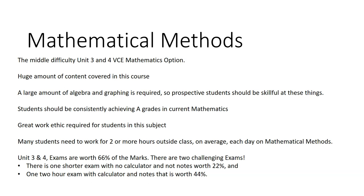For Units 3 and 4, the exams are worth 66% of the marks. There are two challenging exams. There's one shorter exam, goes for an hour, with no calculator and no notes. It's worth 22%. And there's one two-hour exam with calculator and notes that's worth 44%. The remainder of the marks are from the school-based SACs.